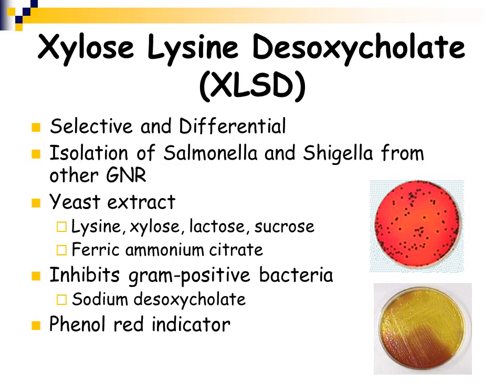XLD, or xylose lysine deoxycholate agar, is both selective and differential, allowing you to isolate Salmonella and Shigella from other gram-negative rods. It contains yeast extract with lysine, xylose, lactose, and sucrose to detect fermentation, and ferric ammonium citrate to detect hydrogen sulfide production. It has sodium deoxycholate to inhibit gram-positive bacteria and phenol red as a pH indicator. XLD is a red media. Organisms with black centers or fully black colonies are hydrogen sulfide producers like Salmonella. Organisms that turn the media from pink to bright yellow ferment lactose and/or sucrose.